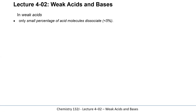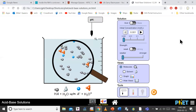In weak acids, only a very small percentage of the acid molecules actually dissociate. In this PHET simulation, if we have a solution of a weak acid, you can see that the equilibrium mixture contains intact HA molecules. Very few of them actually ionize and make hydronium ions and A1⁻ ions.